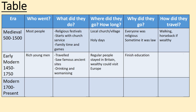Why did they do this? To finish off their education, going and seeing the sites they had read about. How did they travel? A stagecoach — like a very early car with no engine, pulled by a horse, with wooden wheels and no suspension, very uncomfortable. They would use a combination of walking, stagecoaches, and boats to cross the English Channel.